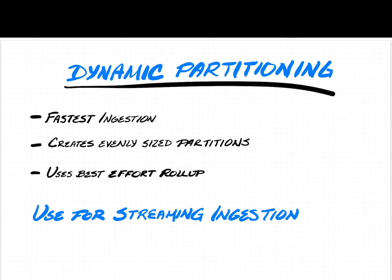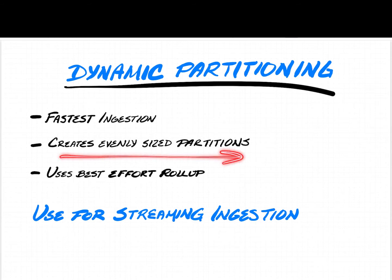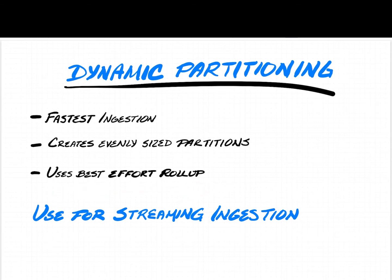The first kind of secondary partitioning is called dynamic partitioning. This is the default — what you get if you don't specify a partitioning strategy. It's the fastest form of ingestion and generally creates pretty evenly sized partitions. One disadvantage is that it uses best-effort roll-up, meaning it only calculates partial aggregations rather than full aggregations. It's also the strategy used for streaming ingestion, which we'll discuss further.